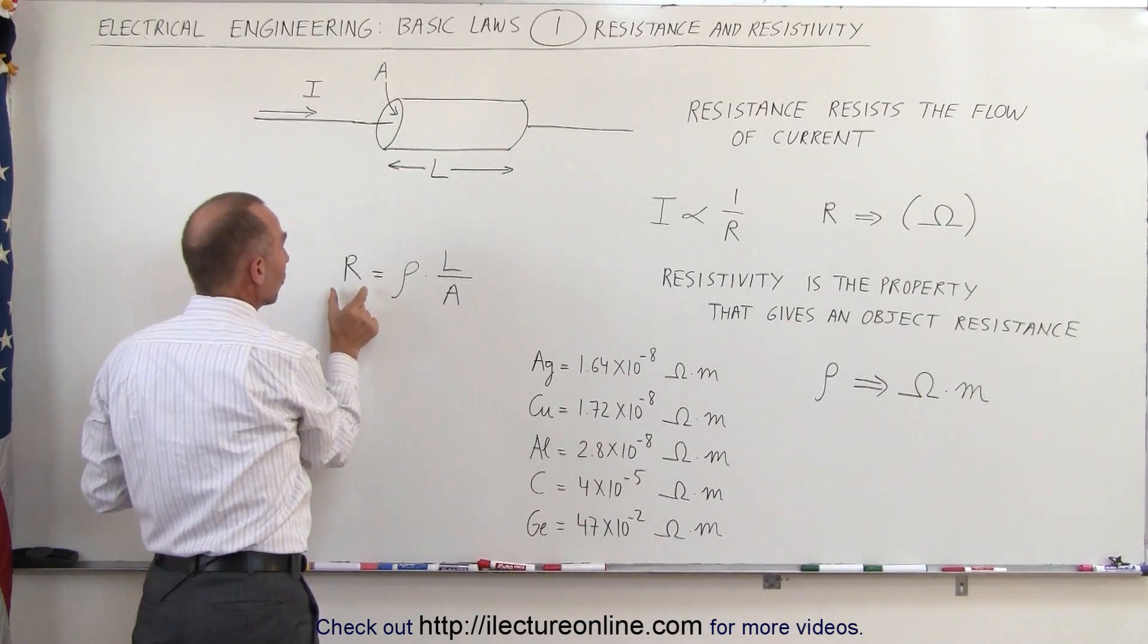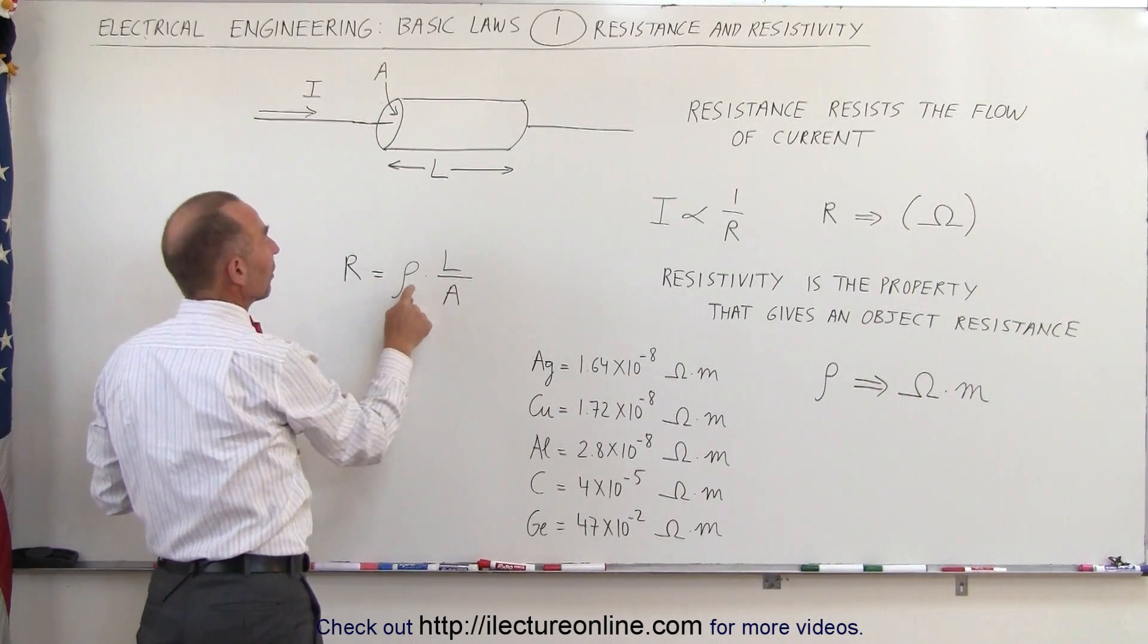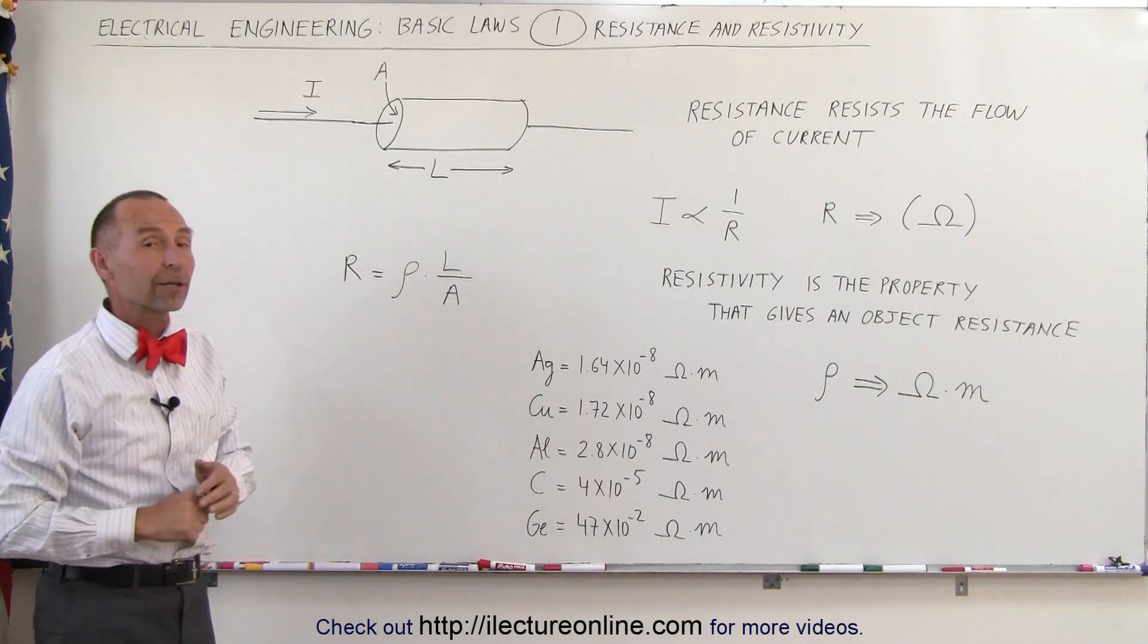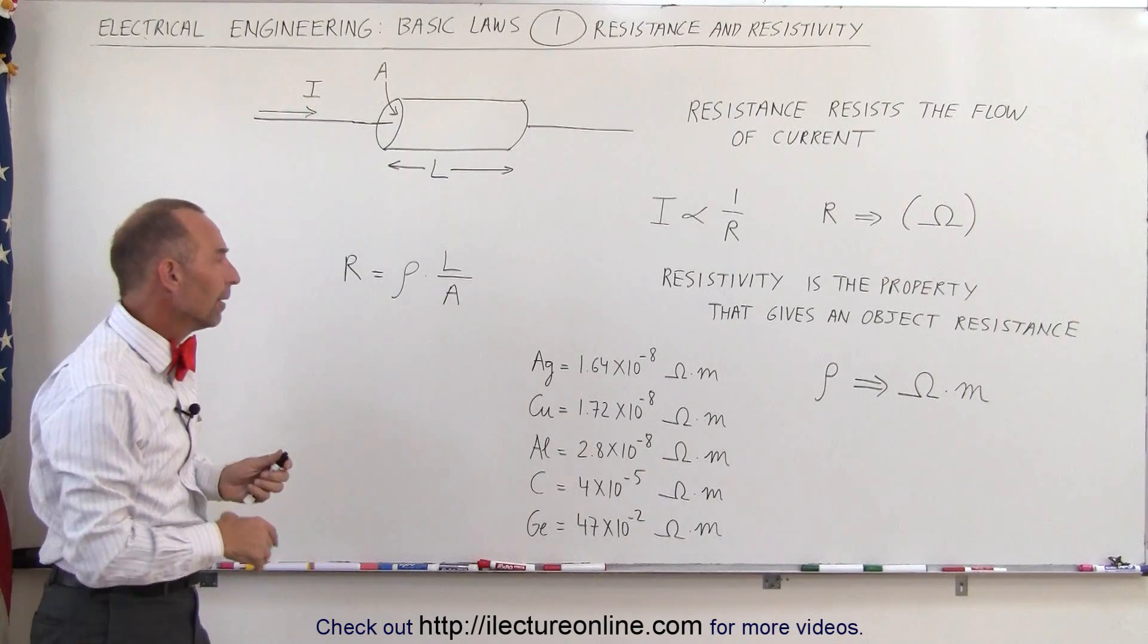So again, the equation is the resistance of an object equals the resistivity times the length divided by the cross-sectional area. To get some feel for it, first of all, let's talk about the symbol for resistivity.